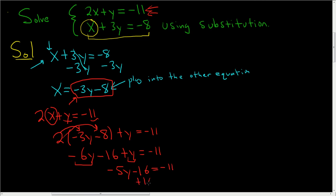Almost done. Add the 16, plus 16, plus 16, and so we get negative 5y equals 5. Finally, to isolate the y, divide by negative 5, and we end up with y equals negative 1.